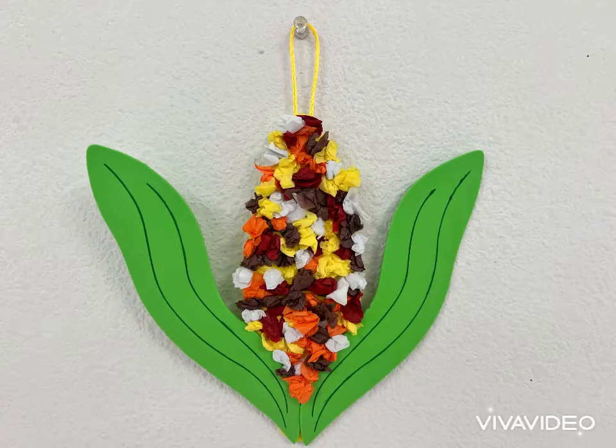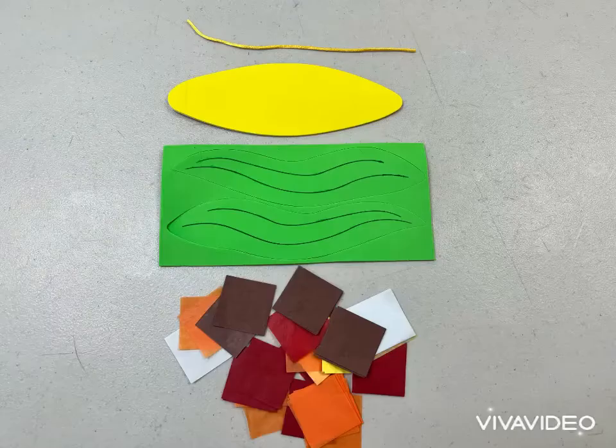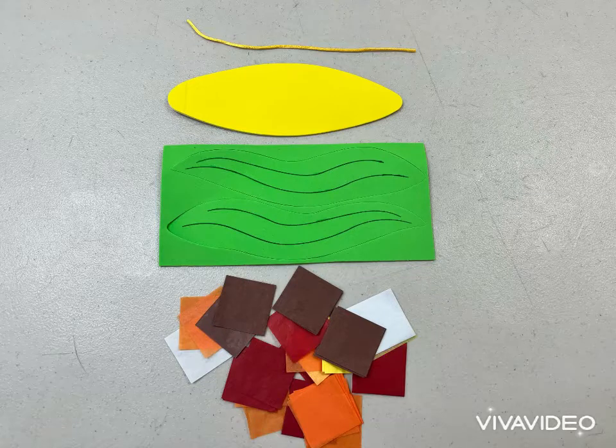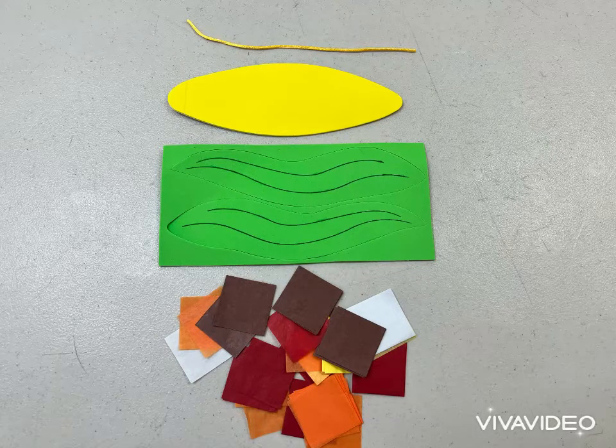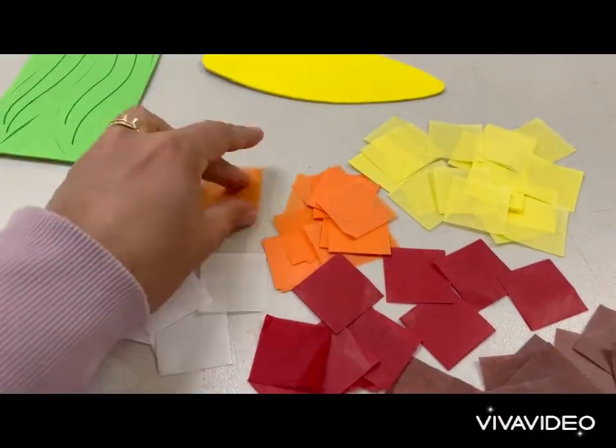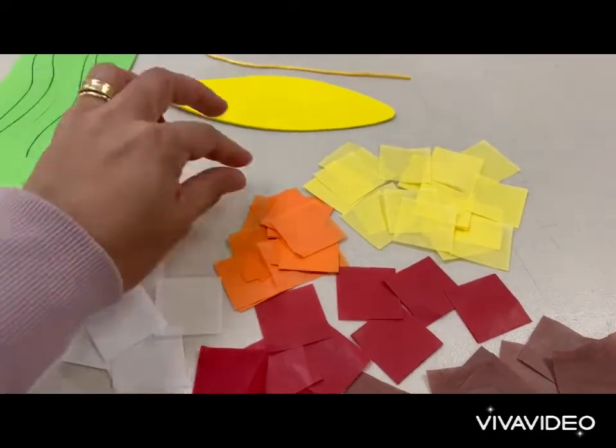Hello everyone, today we are making crinkle tissue paper corn craft kit. Included in the craft are small square tissue paper, foam corn and leaves, and satin cord.